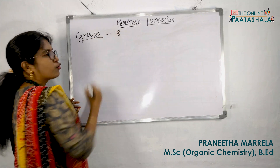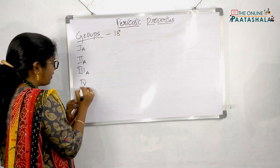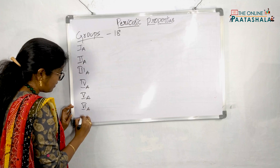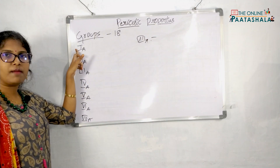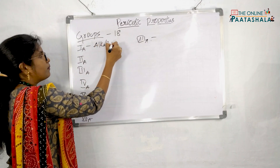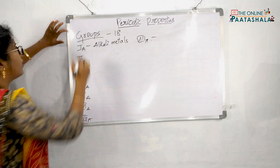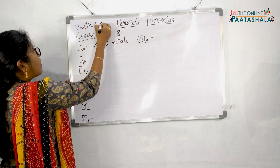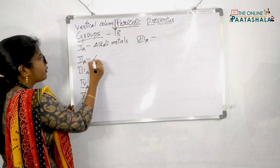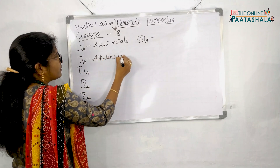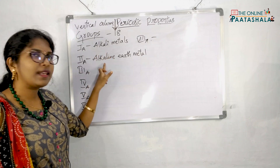Total 18 groups are there. Group 1A elements are known as alkali metals. Group 2A elements are called alkaline earth metals. I will explain why these names are given. These are vertical columns — down the group from top to bottom.